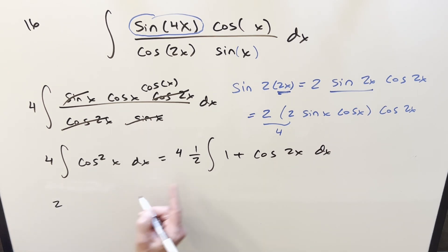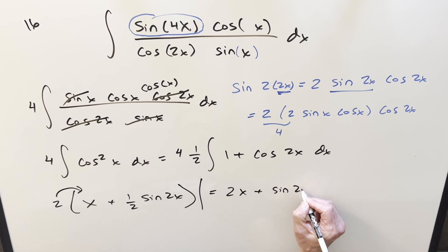So we'll go ahead and integrate. But first this becomes a 2. Integrate this, we get x. Integrate this, we get sine 2x. Bring out the 2. And I was going to say evaluate it, but there's nothing to evaluate. So actually, let me just put the 2. Let's distribute that back in. And so for my final solution on this, we get 2x plus sine 2x add a plus c. And that's it.